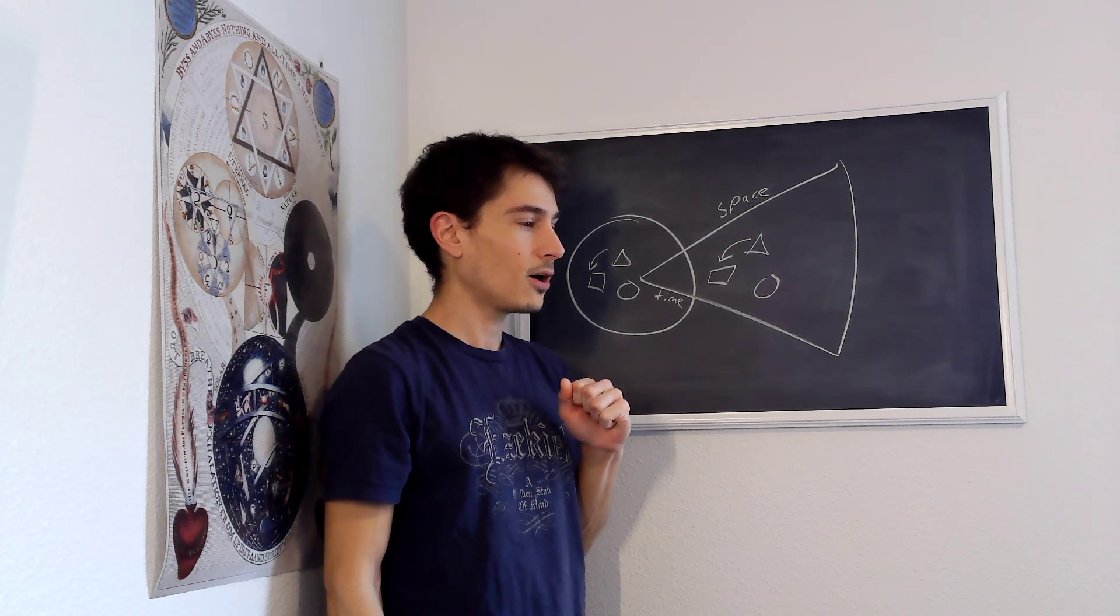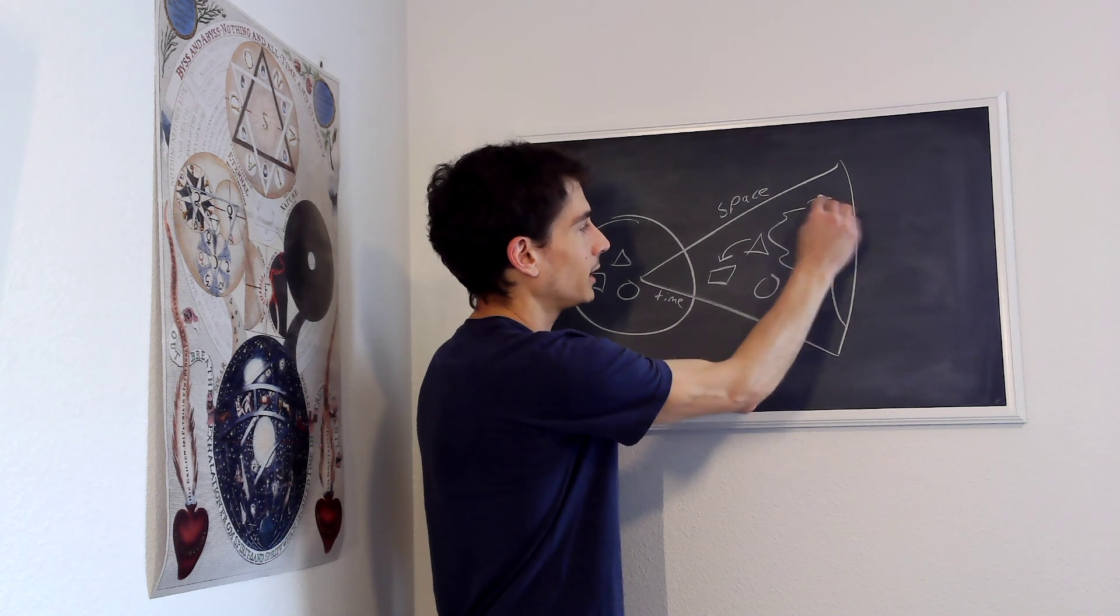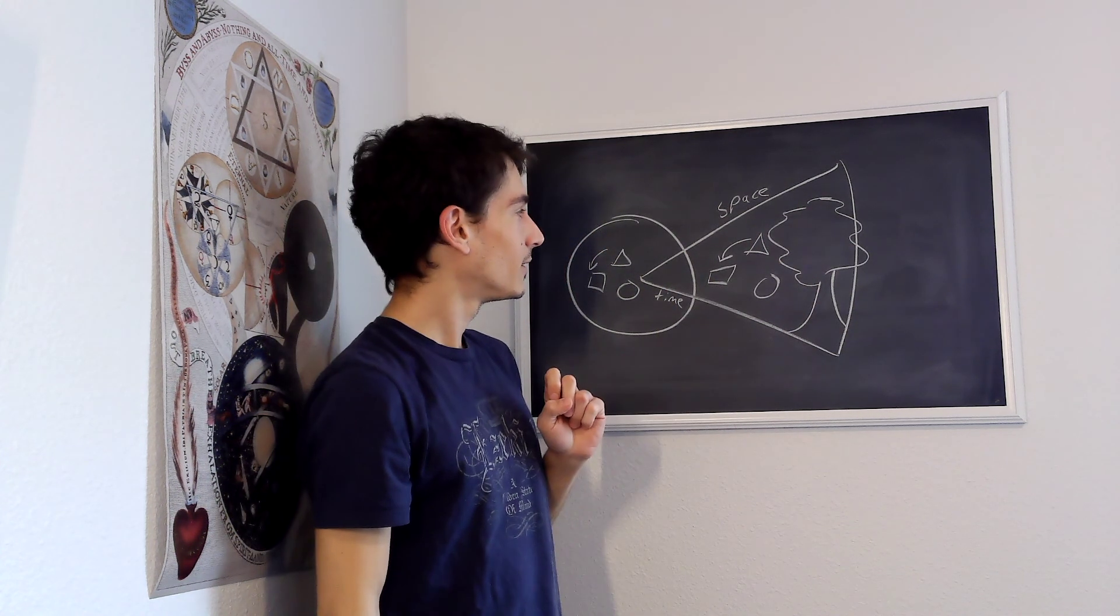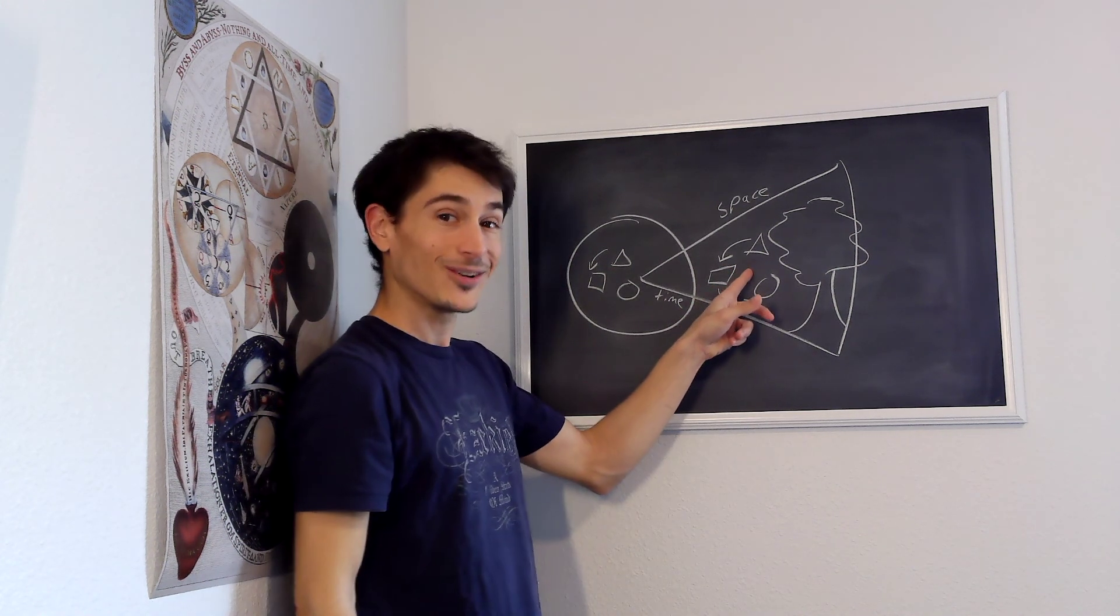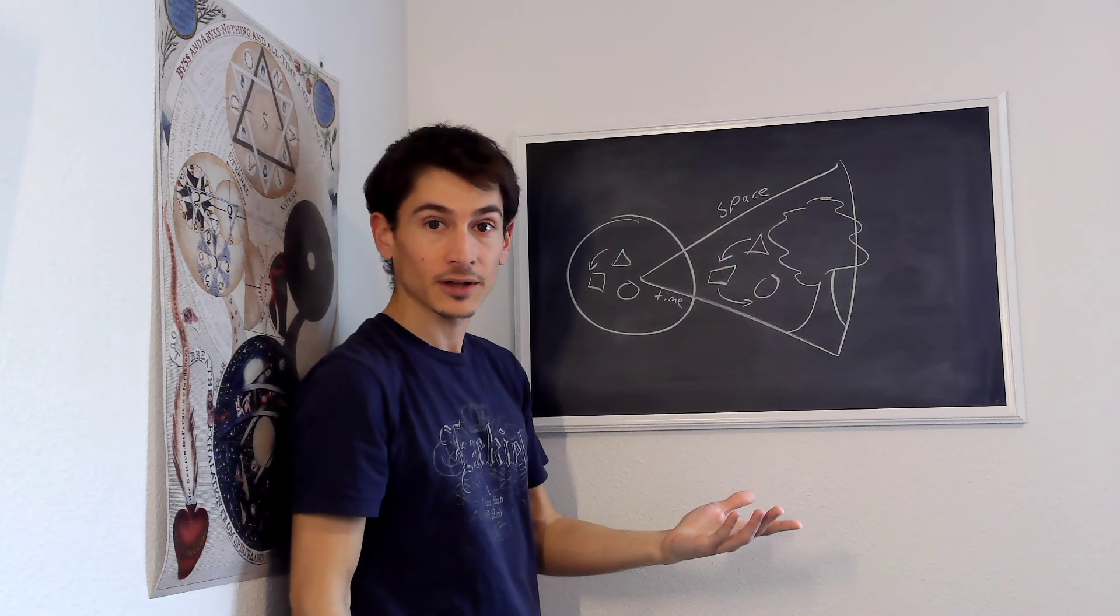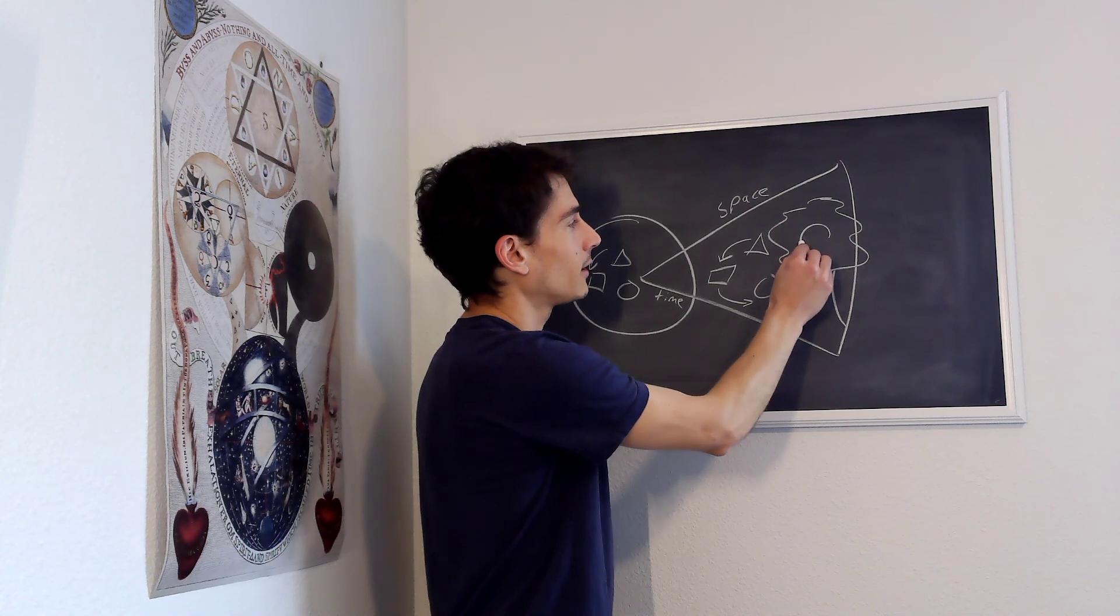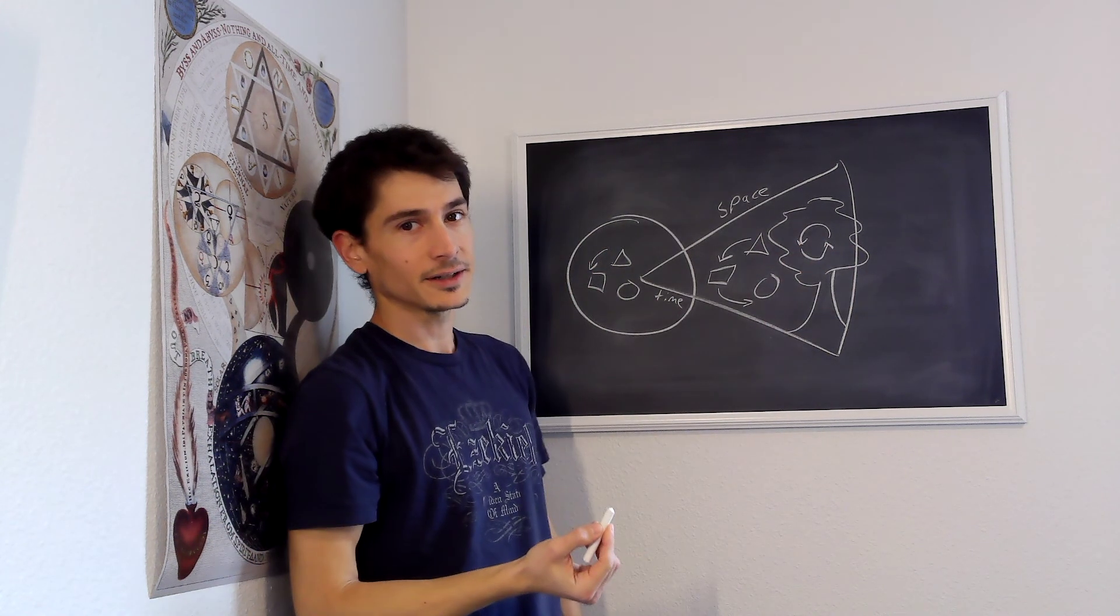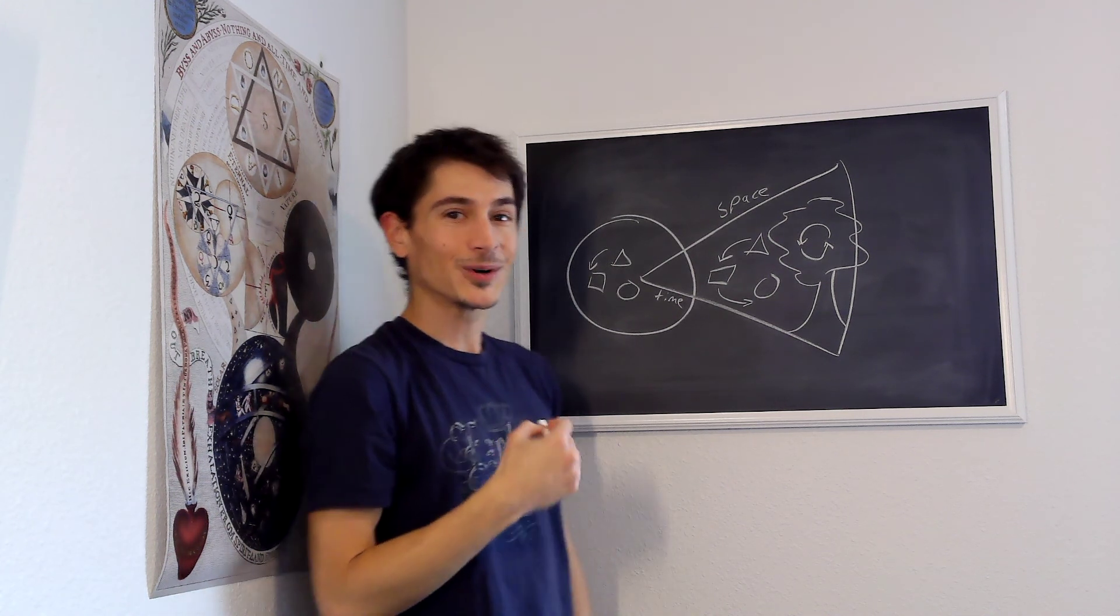The way that Kant realized that organisms display a form of causality that's quite different from the form of causality that holds true of mechanical objects, those that were subject to a Newtonian form of explanation. Organisms display a causality that is circular or self-organizing in Kant's terms.